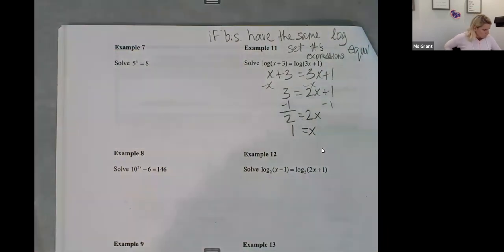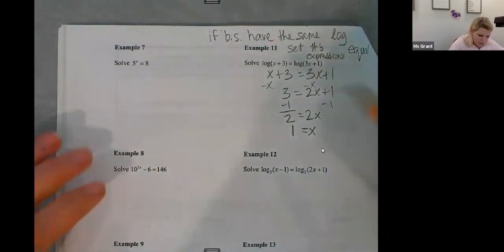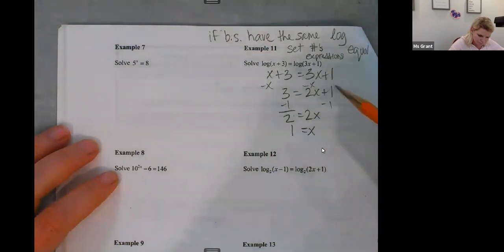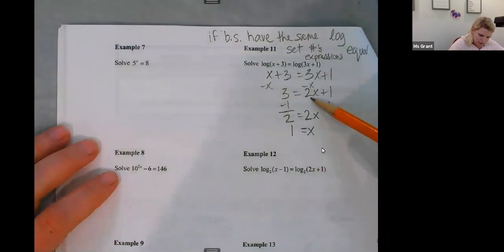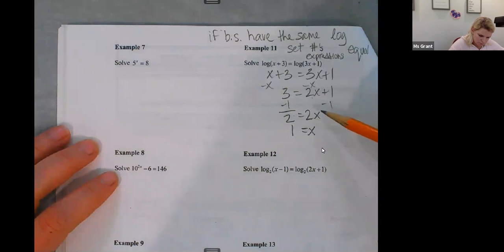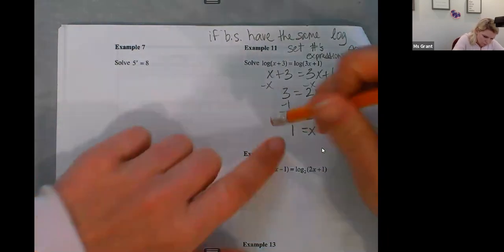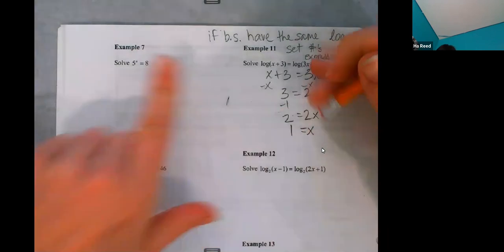Why is it not negative one? Well, I did three minus one and I got two. Three minus three x minus one x is two x. Oh, I got confused with the minus. Okay.